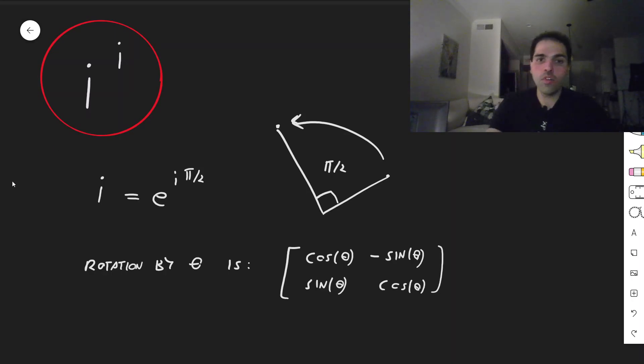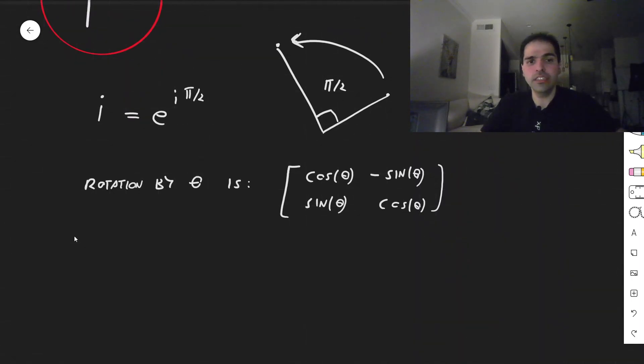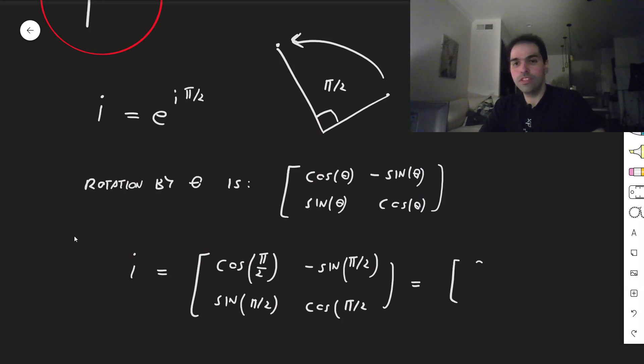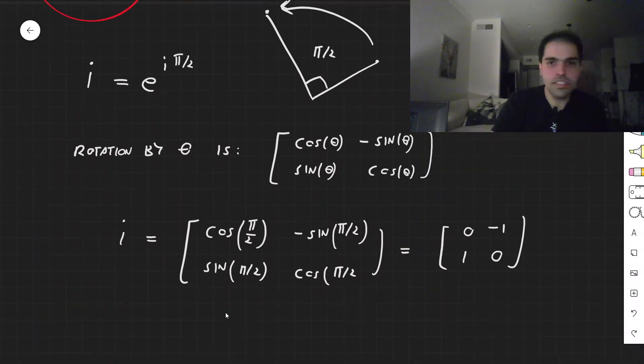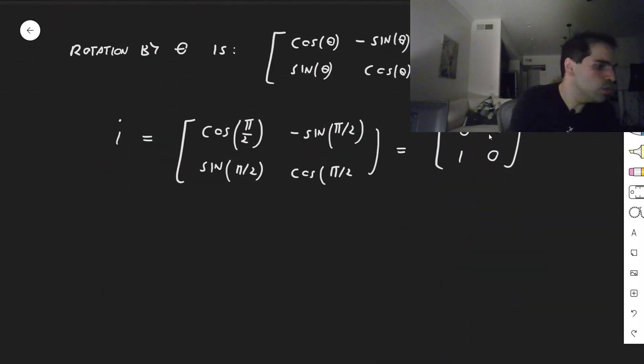So in particular, rotation by 90 degrees, in other words i, would just become cosine of pi over 2, minus sine of pi over 2, sine of pi over 2, and then cosine of pi over 2, which simply becomes 0 minus 1, 1, 0. So really, to calculate i to an i, you just need to calculate this matrix to the power of the same matrix. And again, we'll see how to do this.